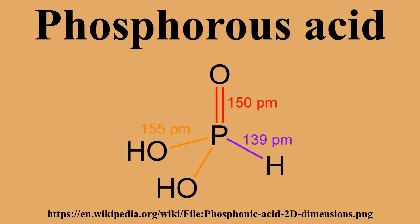Phosphorus acid reduces solutions of noble metal cations to the metals. When phosphorus acid is treated with a cold solution of mercuric chloride, a white precipitate of mercurous chloride forms: H3PO3 + 2HgCl2 + H2O → H3PO4 + Hg2Cl2 + 2HCl. On heating or standing, phosphorus acid reduces mercurous chloride further to mercury metal.